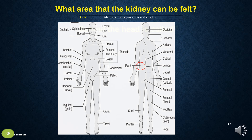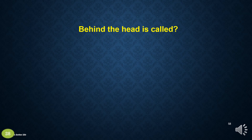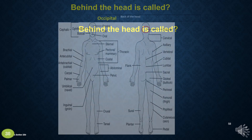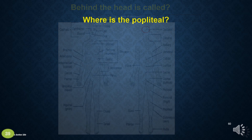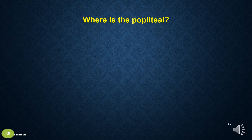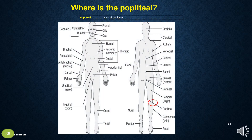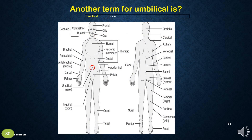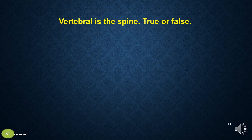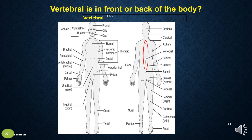Carpal means wrist. Behind the head is called what? Occipital. Where is the popliteal? In the back of the knee. Another term for umbilical is navel. Vertebral is the spine — true or false? True.